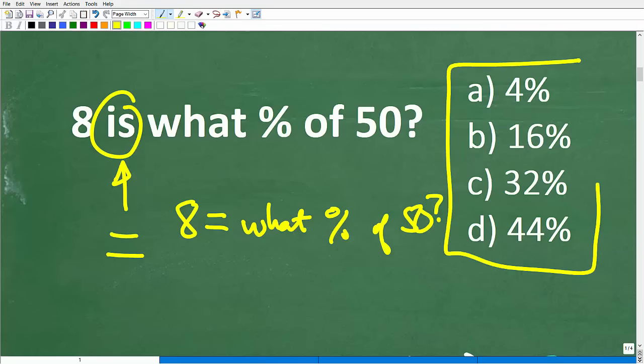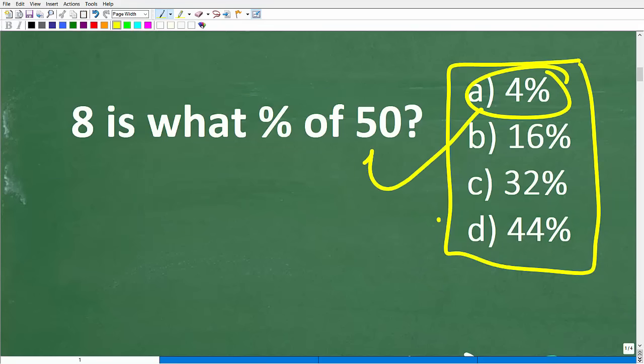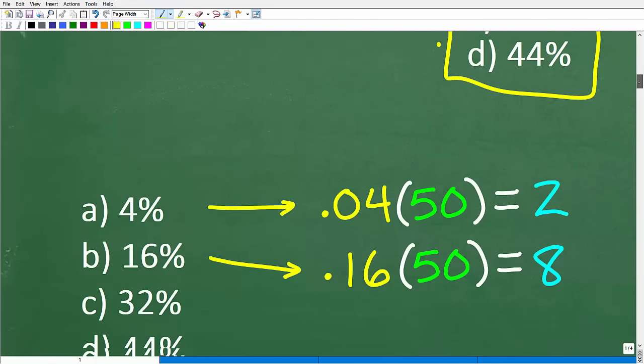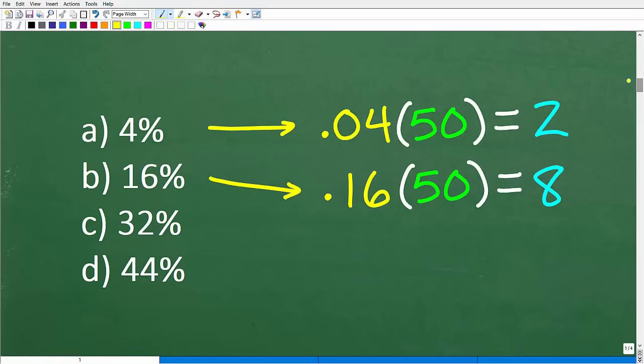Now, how can we solve this problem? Well, we do have a multiple choice question here. So what we could possibly do, if you have a calculator that's so inclined, you could say, you know what? I'm going to take 4% of 50. So I'm going to take 4% of 50, and I'm going to see if this is 8. So if we take 4% of 50, and our answer is 8, then 8 is 4% of 50.